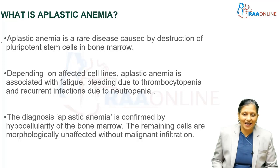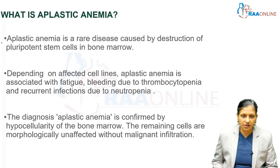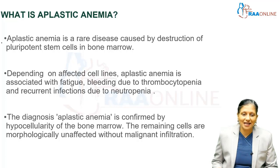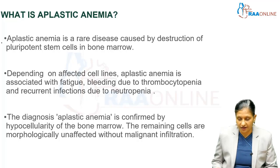Depending on affected cell lines, Aplastic Anemia is associated with fatigue, bleeding due to thrombocytopenia, and recurrent infections due to neutropenia. The diagnosis of Aplastic Anemia is confirmed by hypocellularity of the bone marrow. The remaining cells are morphologically unaffected without malignant infiltration.